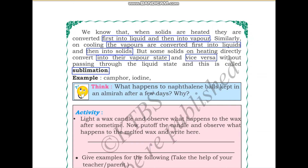What happens to naphthalene balls kept in an almera for a few days? Why? Naphthalene balls are used to keep away cockroaches and other moths. If you keep them in the almera for a few days, you can see that the naphthalene balls become smaller and smaller and they disappear — this is because they are converting to the vapour state and disappearing.